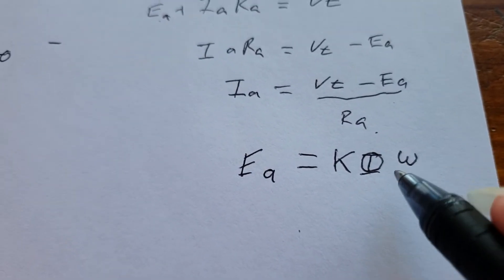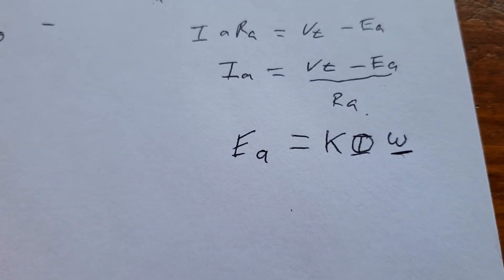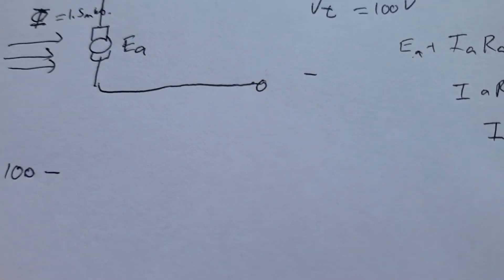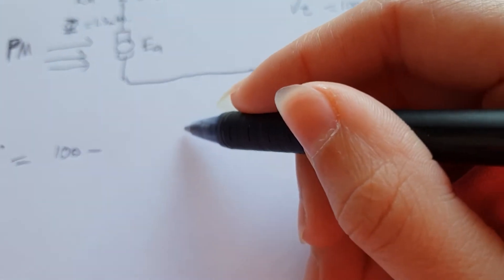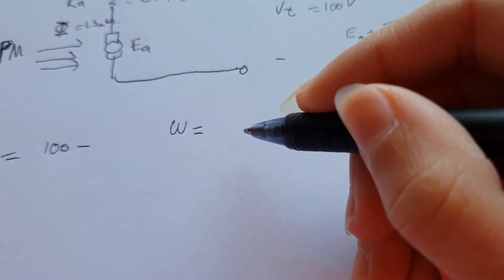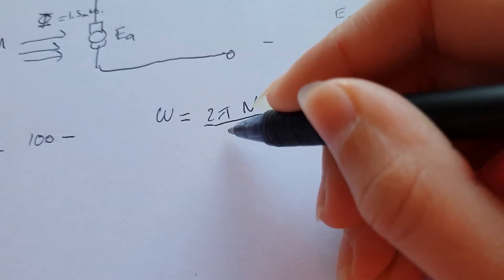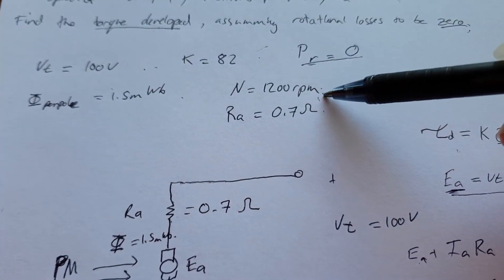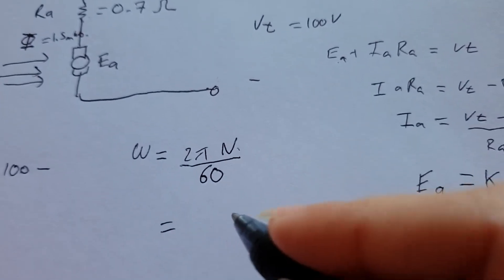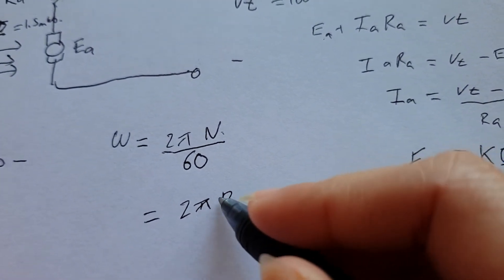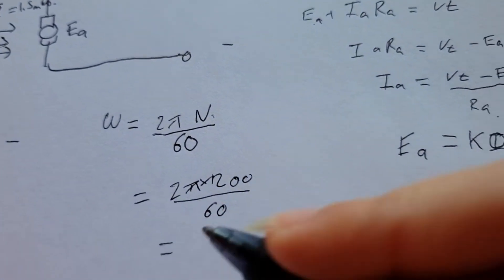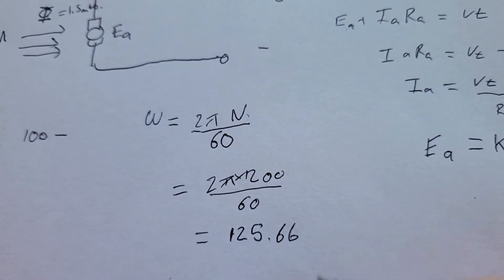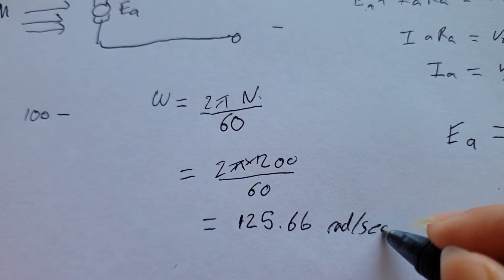We run into a little snag as we don't have our radians per second speed. But that's okay because the formula is omega equals 2 pi n over 60, where n is our speed. So now we can find our omega. We plug in 2 pi times 1200 over 60 and we get 125.66 radians per second. Don't forget the units.